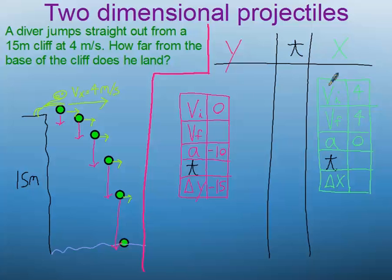Now, the thing that we're most interested in on this problem is calculating time. Because if we know the amount of time that it took him to hit the ground, if we can calculate t over here, then we can shuttle that answer over to the x part and be able to solve for this problem. Because the thing that we're ultimately after is delta x, which is how far he was from the bottom of the cliff when he hit.